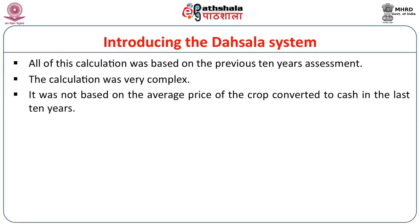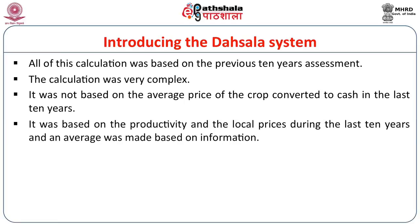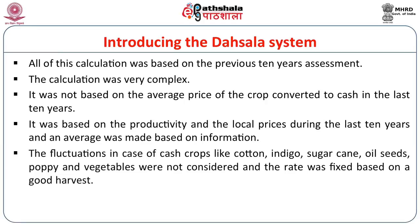It was not based on average price of the crop converted to cash in the last 10 years; it was based on productivity and local prices during the last 10 years and an average was drawn from that information. The fluctuation in case of cash crops like cotton, indigo, sugarcane, oil seeds, and vegetables were not considered and the rate was fixed based on a good harvest.